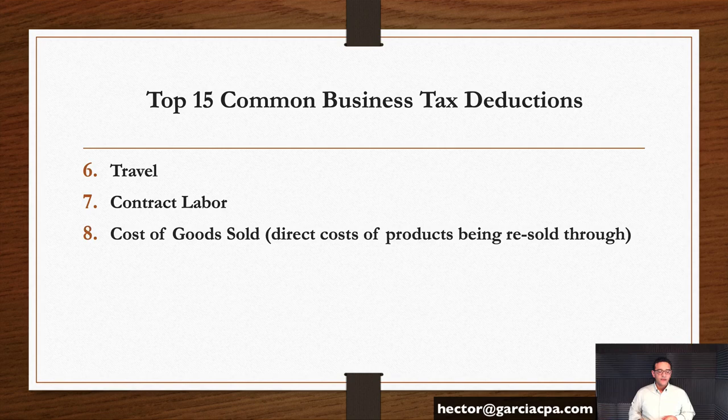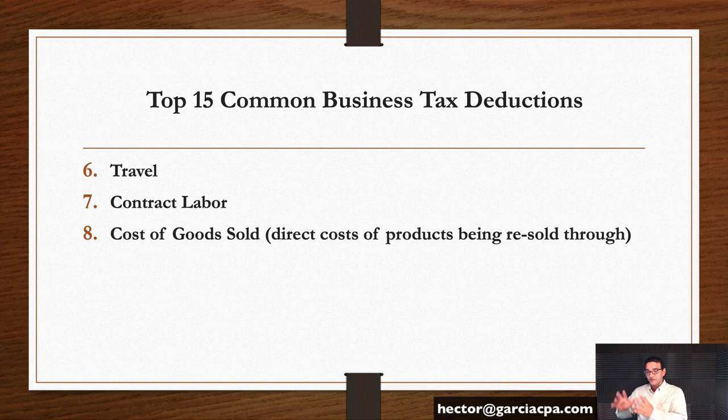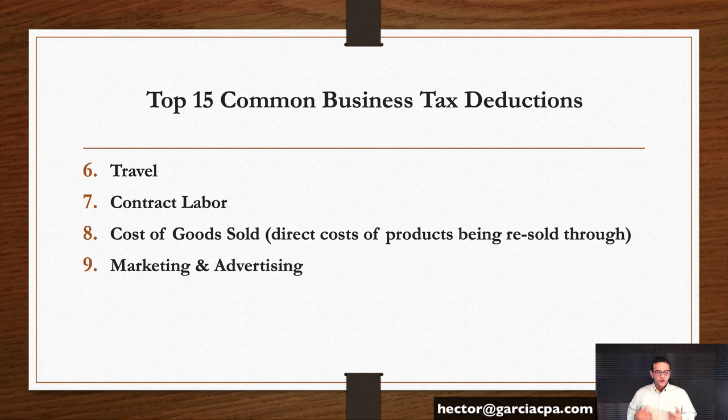Cost of goods sold: any expenditures you make for products you're selling or reselling as a business are obviously deductible. As long as you sell that product, those purchases will be deductible under cost of goods sold. It gets a little tricky if you're an accrual-based business owner who tracks inventory — only the portion of purchases for products that were actually sold will be deductible. Talk to your accountant about accrual-based accounting and inventory.